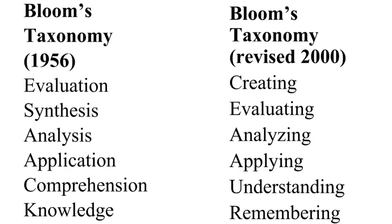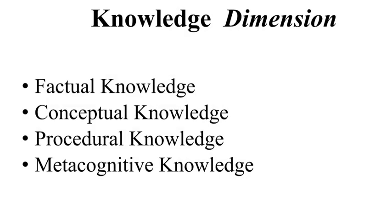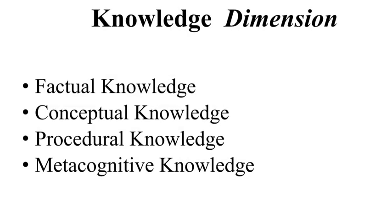Let's set these lists side by side to highlight some of the differences. Most noticeable, perhaps, is that the nouns from the original list have become verbs in the revised list, to better reflect the active nature of learning. You may also notice that the second element of the original list, synthesis, has become creating, and has been bumped up to the top of the revised list. Also, the knowledge category from the original taxonomy has been removed — not because we don't think knowledge is important, but because it's recognized that knowledge is sort of what the whole thing is about. Knowledge is now an entire dimension of the revised taxonomy, and it's recognized that there are four kinds of knowledge we're concerned with.